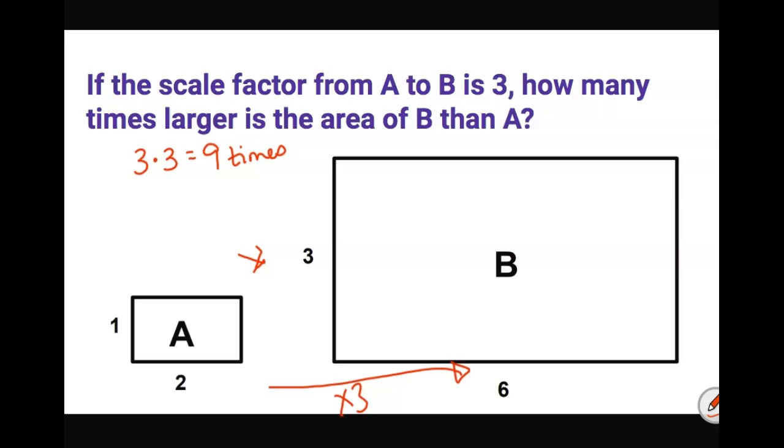Let's go ahead and check here because this is a scale factor of 3 you can see. So if we go ahead and find the area of each of these two rectangles, the first one has an area of one times two or two square units, second one three times six is eighteen square units, and we can see that two times nine is eighteen, so indeed this is nine times larger.